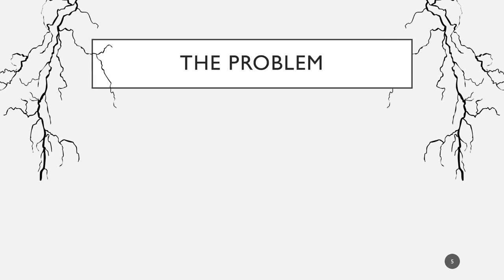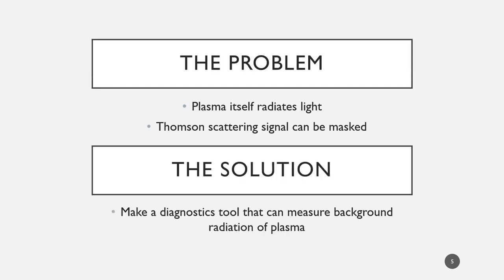So then what's the problem? We keep referring to this idea of plasma and lightning. Our plasma flashes and radiates light. That means that our Thompson scattering signal can actually be masked. So the solution is to make a diagnostics tool that can measure the background radiation of the plasma to see if we can find our Thompson scattering signal.